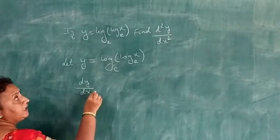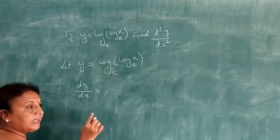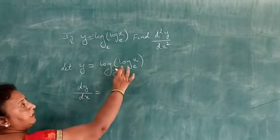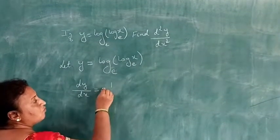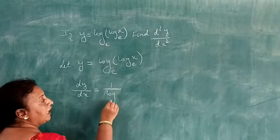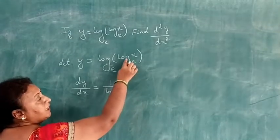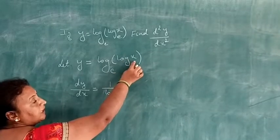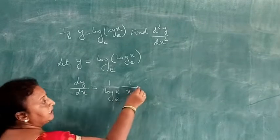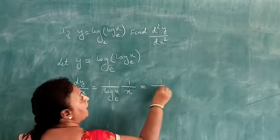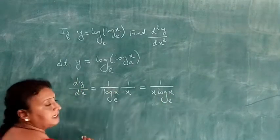Differentiating using the chain rule: dy/dx equals derivative of log(log x), which is 1 by log x, multiplied by the inner derivative of log x, which is 1 by x. So dy/dx equals 1 divided by x into log x to the base e.